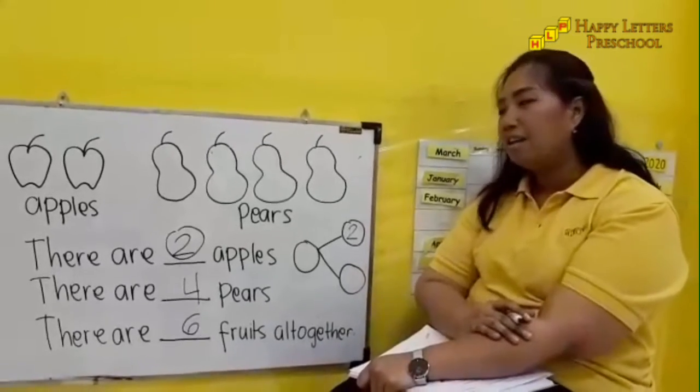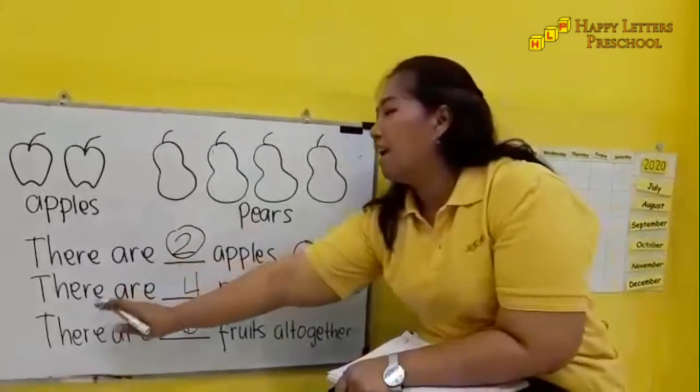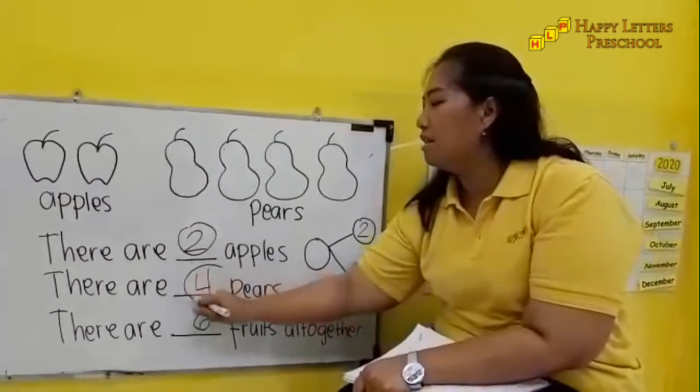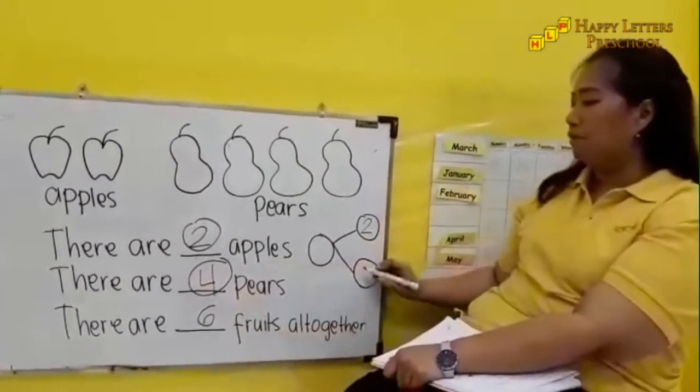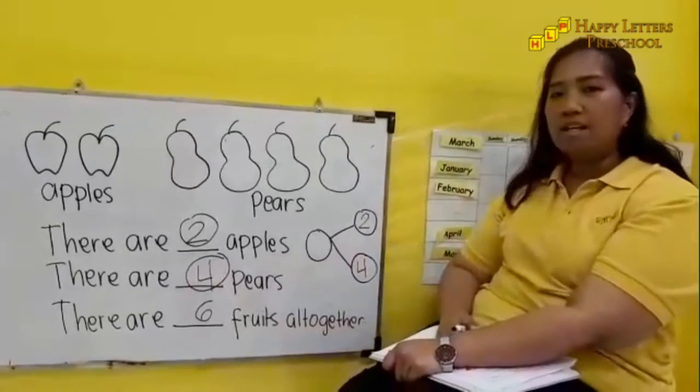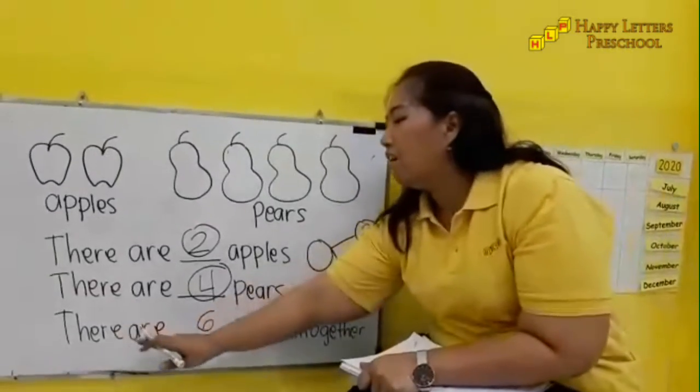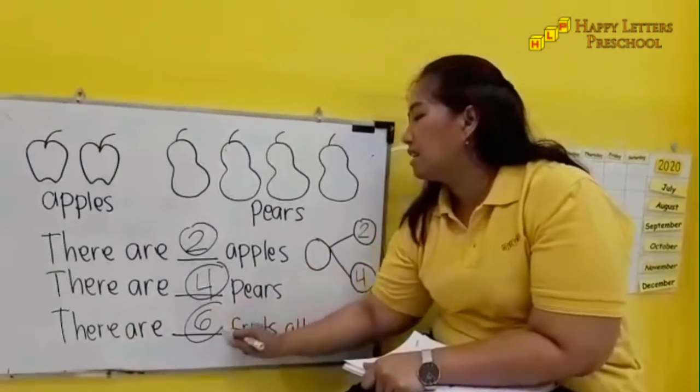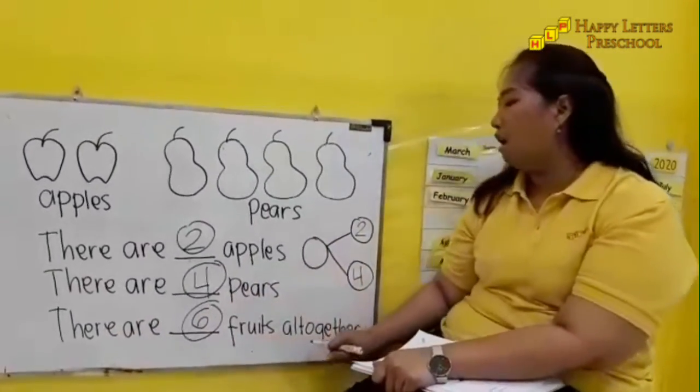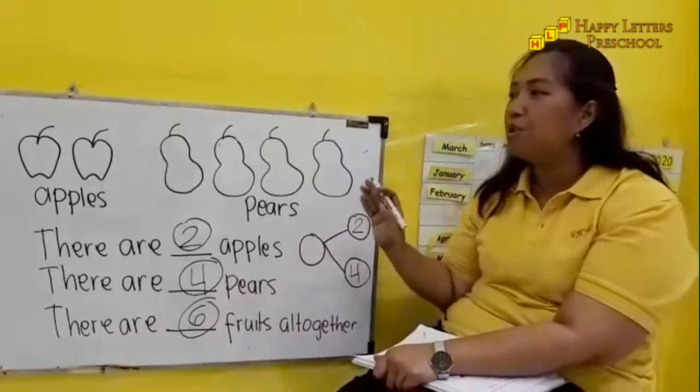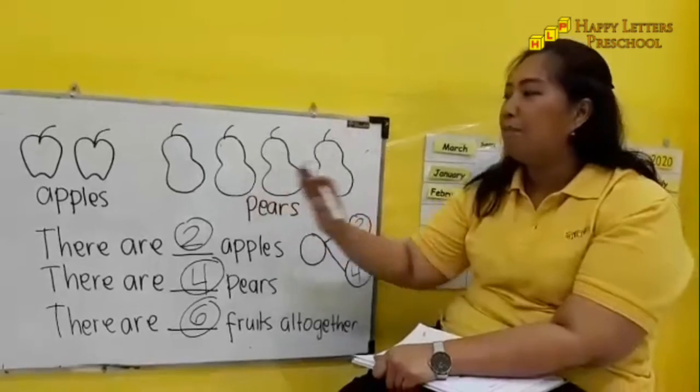Next, there are four pears. Let's write down number four on the second circle. Next, there are six fruits altogether, which means that we have to add apples and pears.